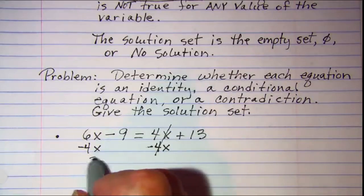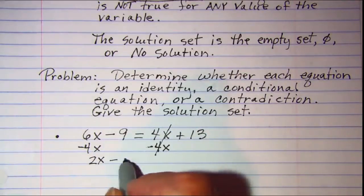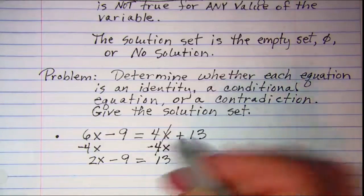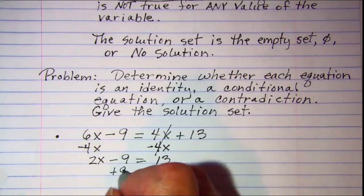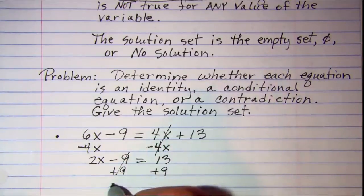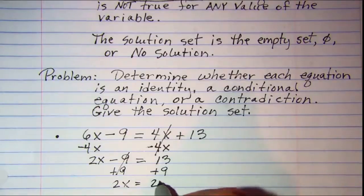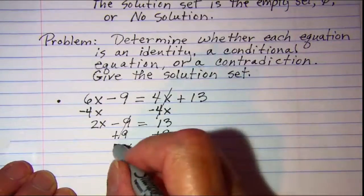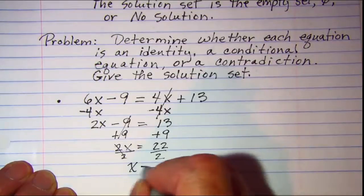These will cancel, and I have 2x minus 9 equals 13. Then add 9 to both sides. These will cancel, and I have 2x is equal to 22. Divide both sides by 2, and these will cancel, and x is equal to 11.